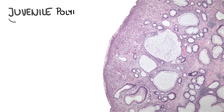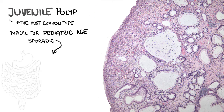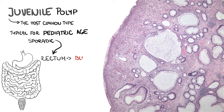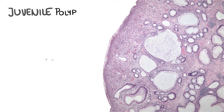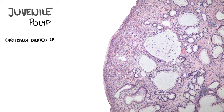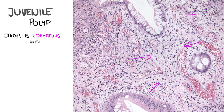The juvenile polyp is the most common type. It is typical for pediatric age and may be sporadic or come as part of juvenile polyposis. A sporadic juvenile polyp often appears in the rectum and represents a common source of rectal bleeding. It is usually a few centimeters large with a smooth surface on gross examination. Microscopically, it consists of cystically dilated crypts containing mucus or pus — that is why it used to be called a retention polyp.